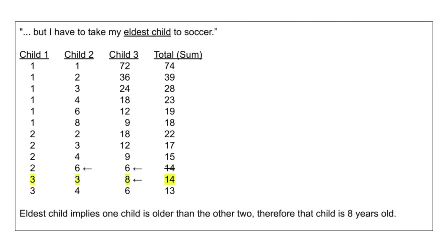The last sentence that helped solve the brain teaser is, but I have to take my eldest child to soccer. Eldest child implies that one child is older than the other two. If we look at the two rows with the total sum of 14, the first one has two children who are at the age of 6. The term eldest child cannot apply to this row. Therefore, the answer is definitely the second row, which has children of ages 3, 3, and 8, where the 8-year-old is the eldest child.